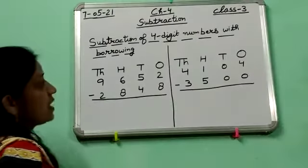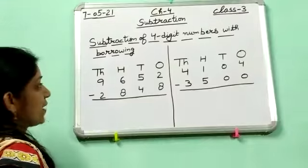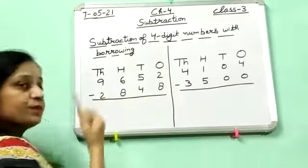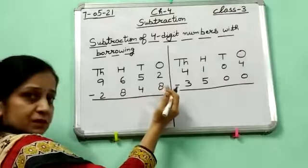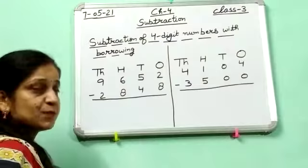First one, this is the sum given to you. You have to subtract this from this. So first of all you have to start from this side, means from 1's place.